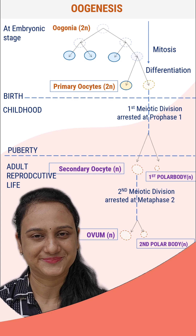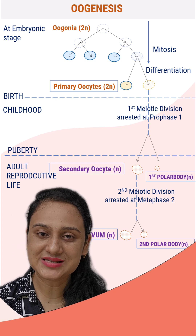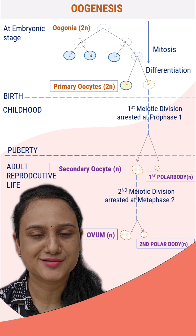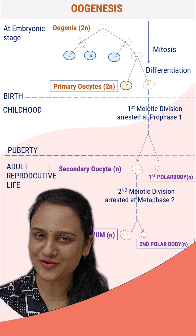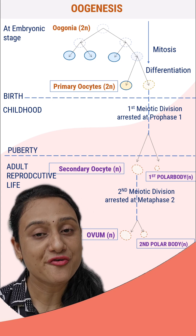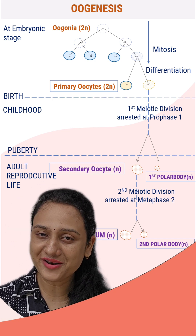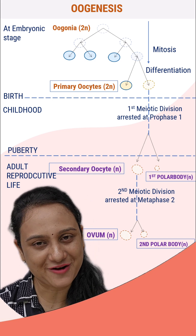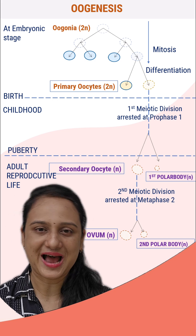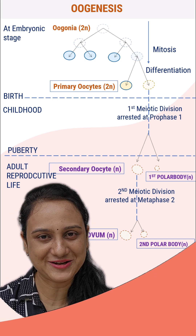Oocytes are also surrounded by layers of cells called granulosa cells, and these form follicles. Regarding follicle cells, we will cover that in the next video. The topic of oogenesis is now complete.